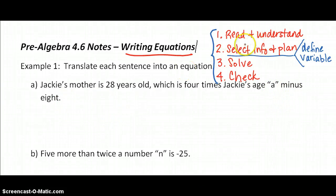So our first step is to read. Sometimes I have to read it twice to understand what I'm reading. Then our second step is to select information and defining our variable is going to fall under selecting information. So I'm going to go ahead and say that I know A represents Jackie's age. I got that the first time I read the sentence.